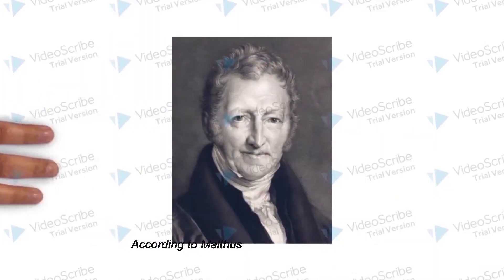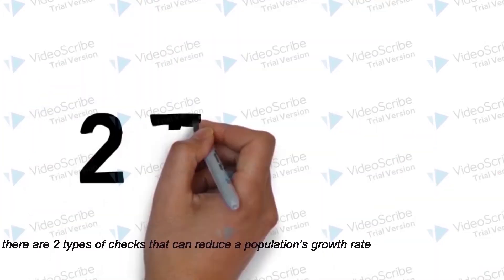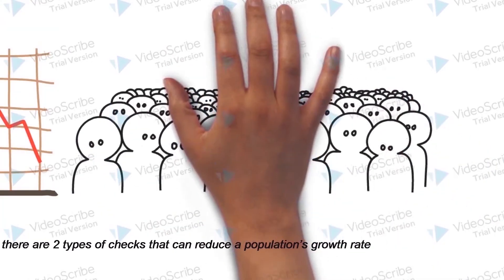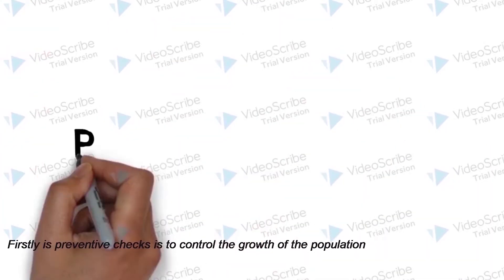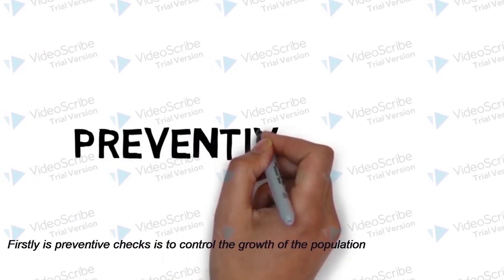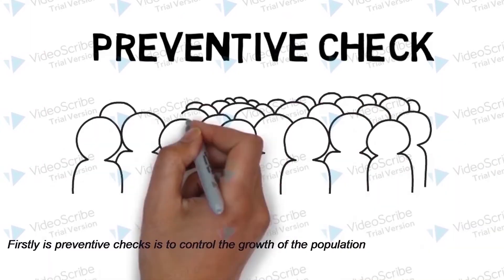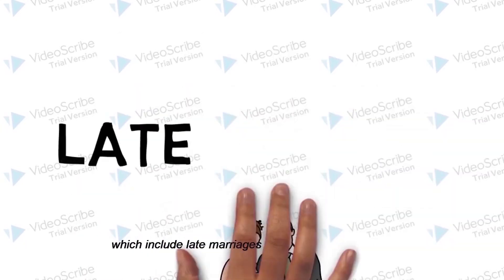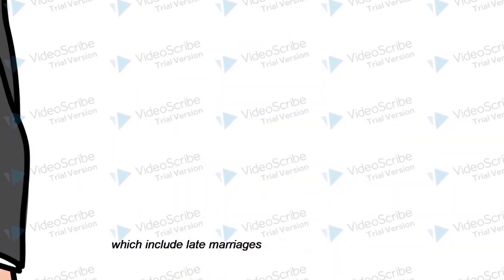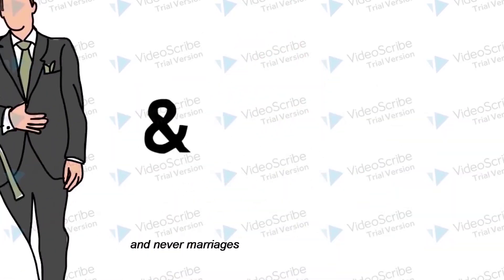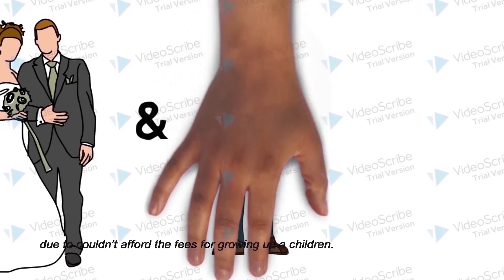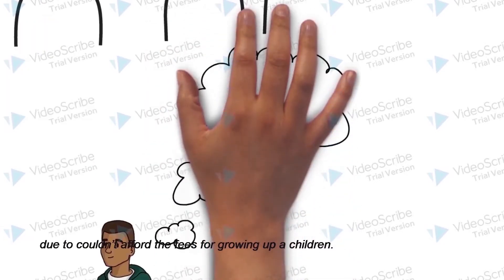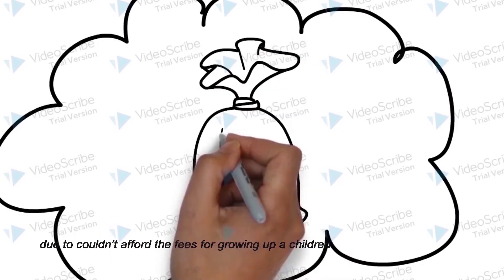According to Malthus, there are two types of checks that can reduce a population growth rate. Firstly, his preventive checks are used to control the growth of the population, which include late marriages and never marrying due to not being able to afford the costs of raising children.